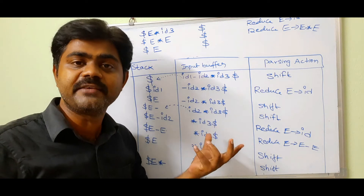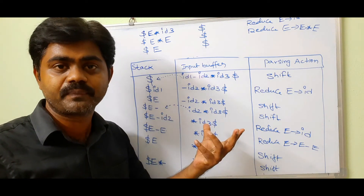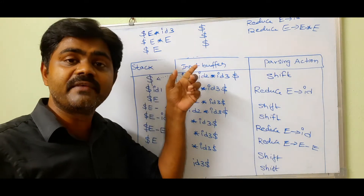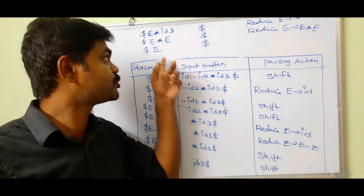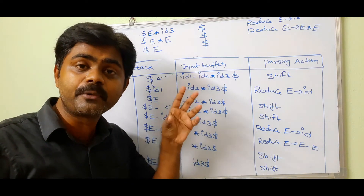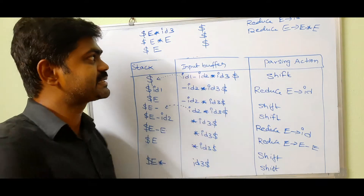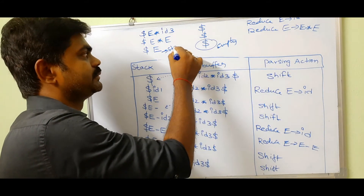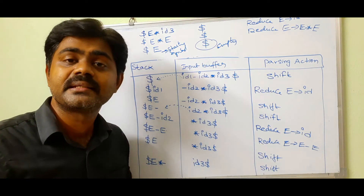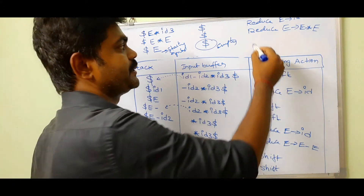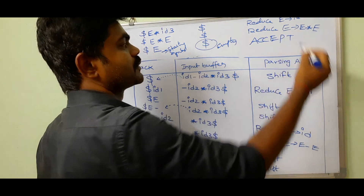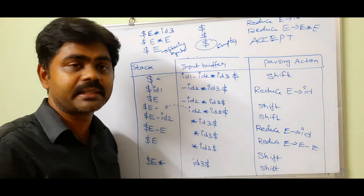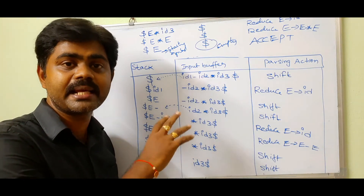We started from leaf nodes and reached our root node. The stack contains the starting symbol E along with dollar, and the input buffer is empty — so we accept. This completes shift-reduce parsing for the first example. Please pause the video to note it down, and we'll do another example for more clarity.